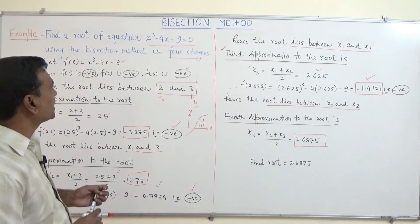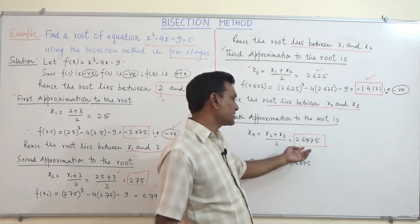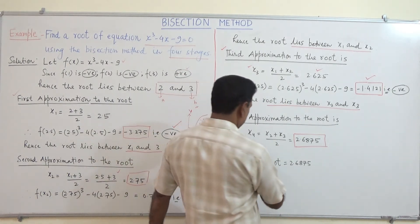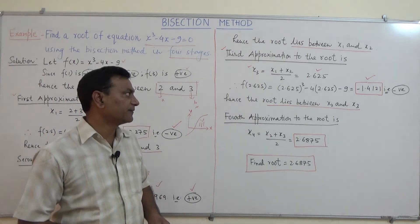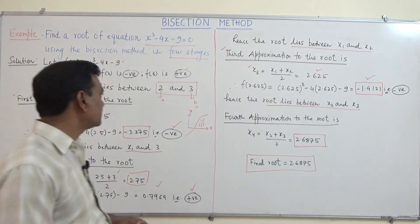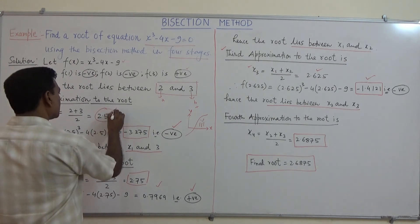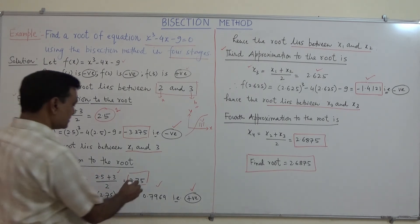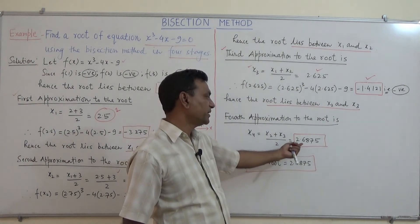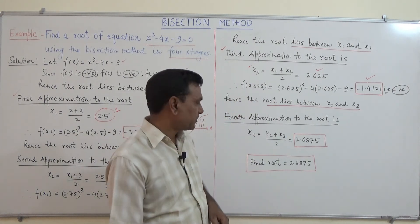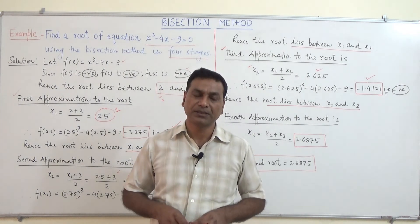As per the requirement of the question, we go up to four stages. The fourth approximation is 2.6875, which is the final root. Comparing the successive approximations: 2.5, 2.75, 2.625, and 2.6875 — this is the final approximation using the bisection method. I hope you would be benefited from this lecture. Thank you.